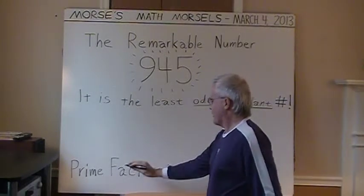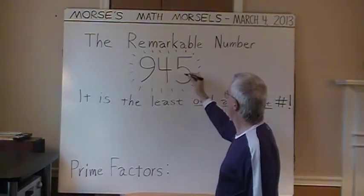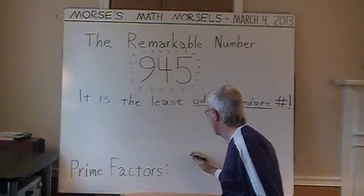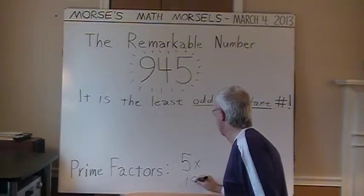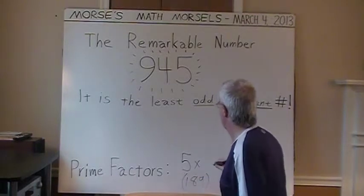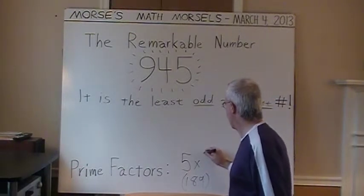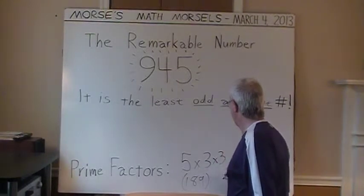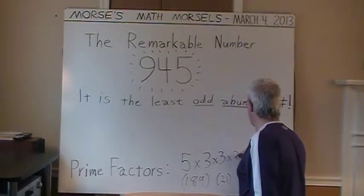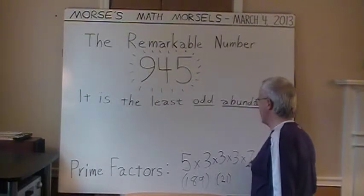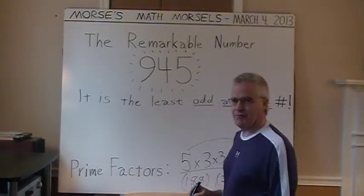First I'm just going to check the prime factors of 945, then proceed with the proper factors. The number ends in 5, so it's divisible by 5 — we have 5 as a prime factor. Dividing by 5 leaves 189. And 1 plus 8 plus 9 is 18, which is a multiple of 9, so we can factor out a couple of threes, leaving 21. And 21 equals 3 times 7. So that completes the prime factoring of 945: 3 × 3 × 3 × 5 × 7.